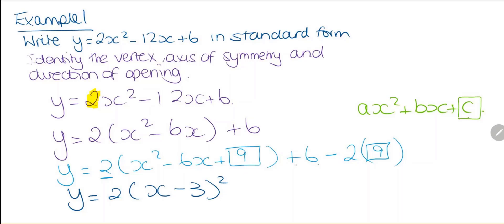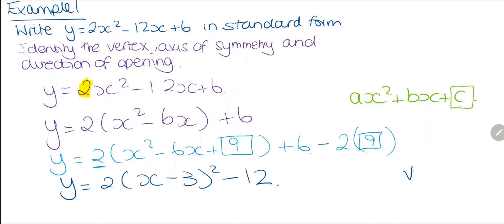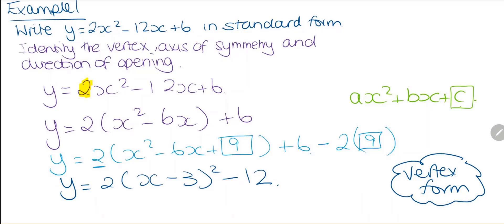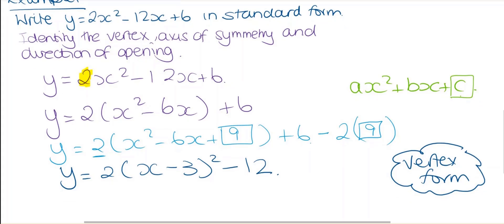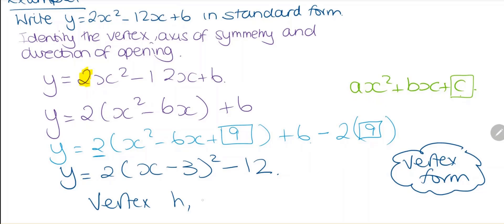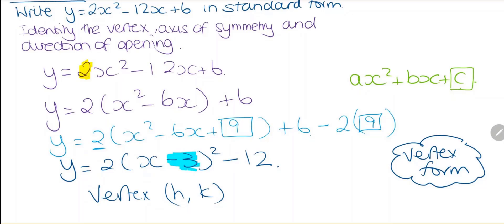Then plus 6 minus 18 gives us minus 12. So this is now in vertex form. To find the vertex — this is h and k — our h value is from (x - 3), but we take the opposite, so h = 3. And k = -12. So the coordinates for our vertex are (3, -12).